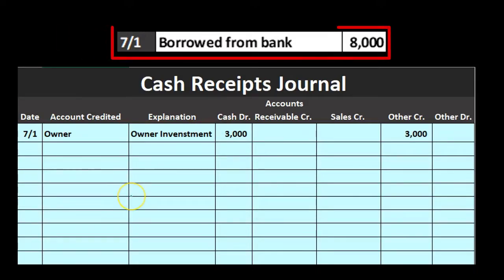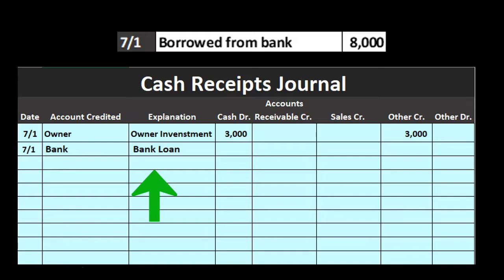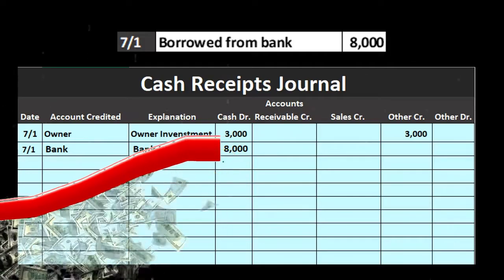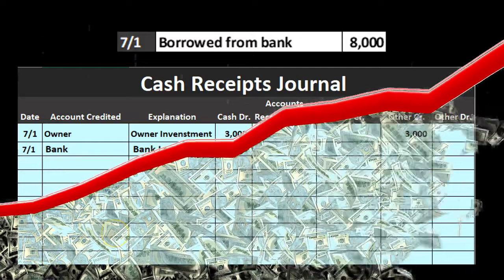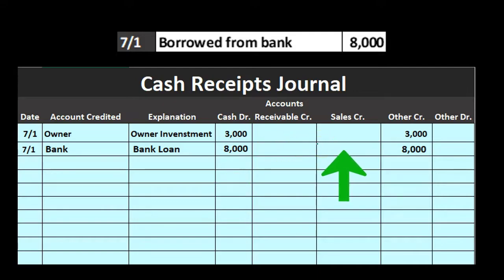The next item on 7-1 is borrowing from the bank. The account credited is the bank, and the explanation is 'bank loan.' Cash goes up — we always debit cash in the cash receipts journal. The other side goes into 'other' again because we don't expect many bank loans. Hopefully most of the time we're making sales or collecting money on account for past sales, not borrowing from the bank.